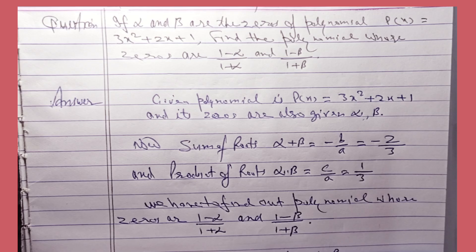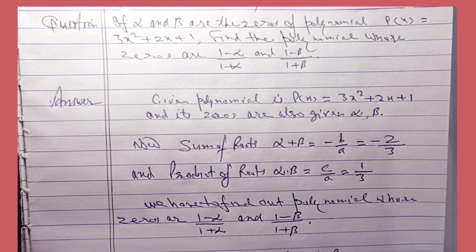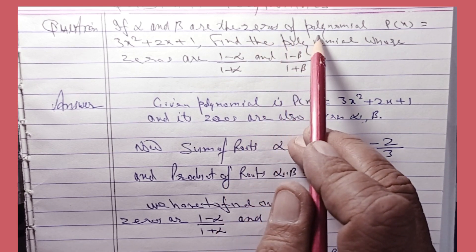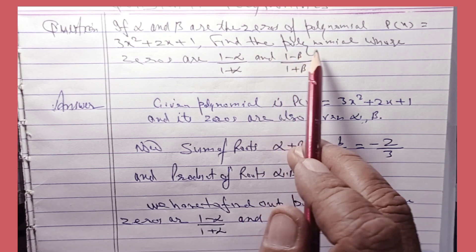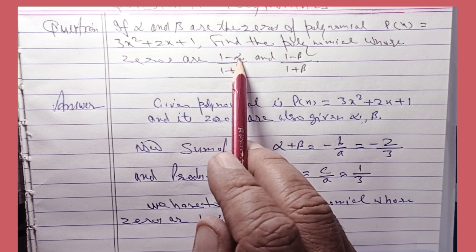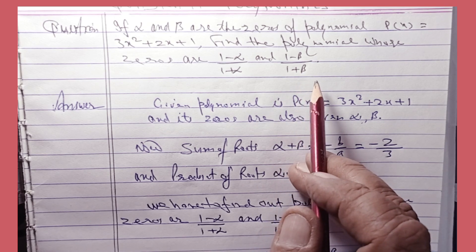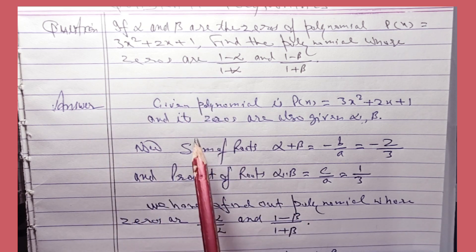Please like, subscribe and share my channel. Hello friends. Now we are taking a question from polynomials in which you are given a polynomial and its zeros alpha and beta, and you have to find out another polynomial. The question is: if alpha and beta are the zeros of polynomial p(x) = 3x² + 2x + 1, find the polynomial whose zeros are (1 - α)/(1 + α) and (1 - β)/(1 + β).